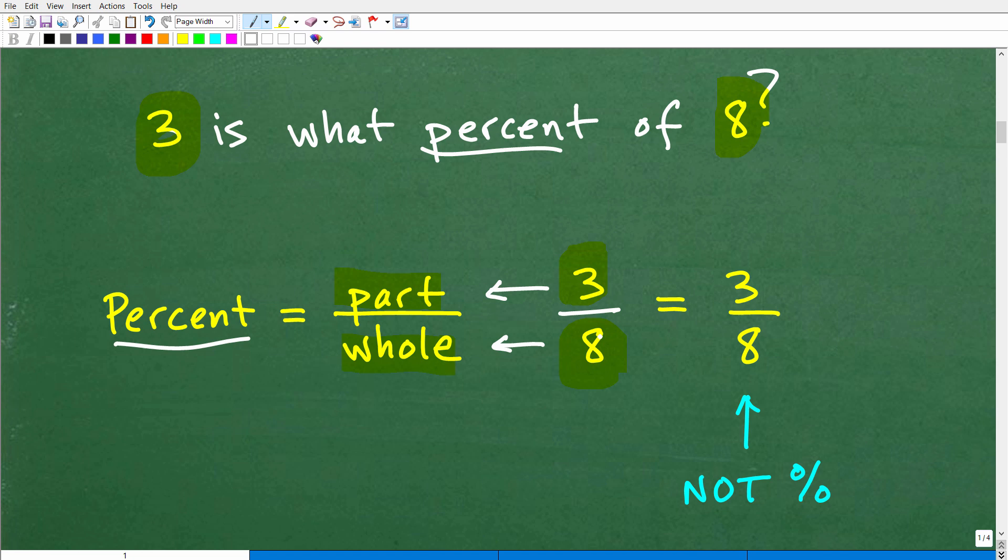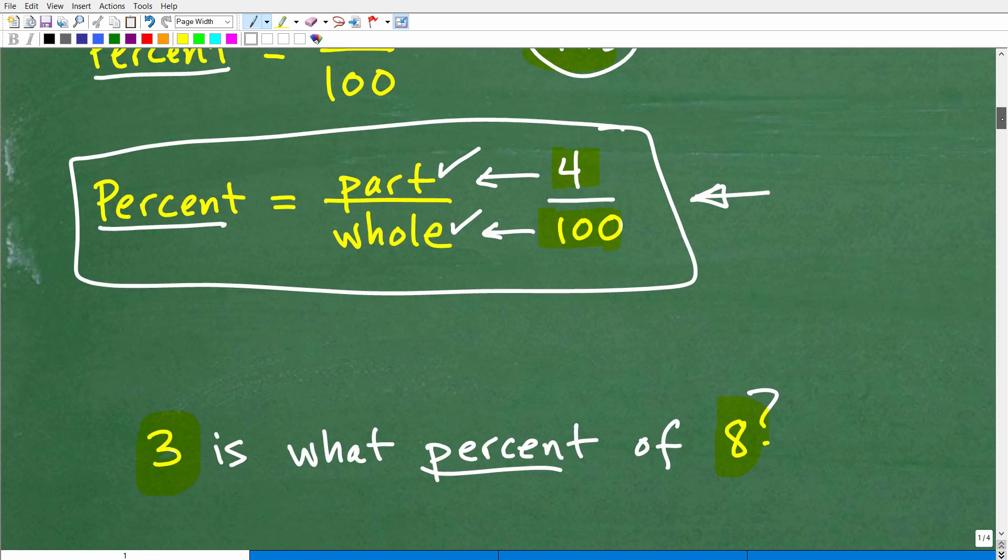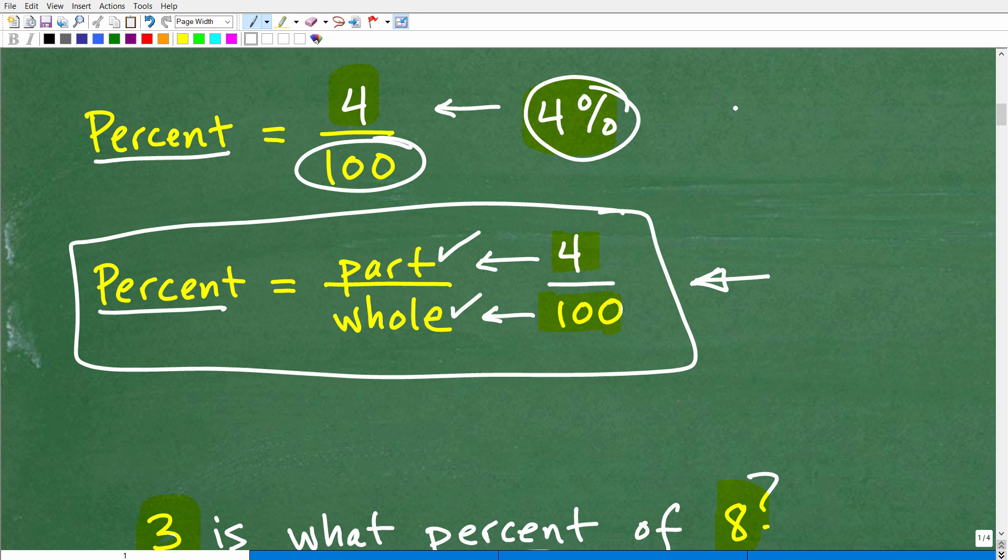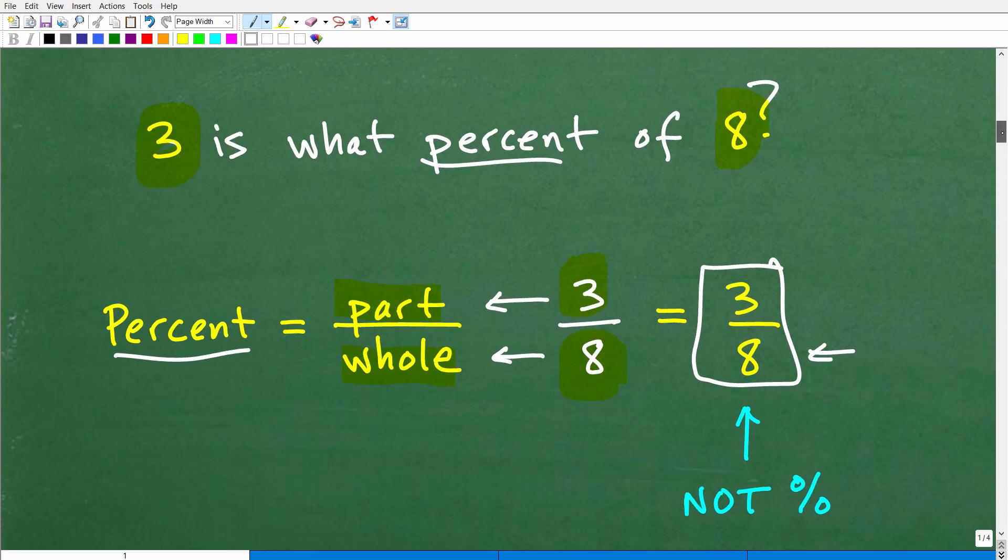How much is 3 out of 8? You could write a fraction: 3/8. That's pretty good, but here's the deal. After we set this up, 3 is a part and 8 is the whole, we have the fraction 3 over 8, but this is not percent. Why is this not percent? Because remember, the definition of percent is the denominator over here has to be 100. So we're going to have to do a little tweak, but this is no big deal.